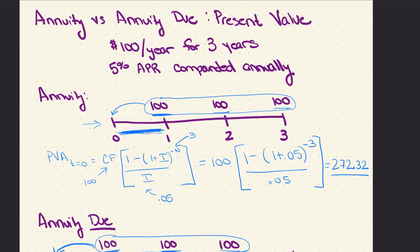So that is the interpretation of an annuity versus an annuity due when solving for present value. I also have a separate video for future value, which I'll link here at the end of this video.